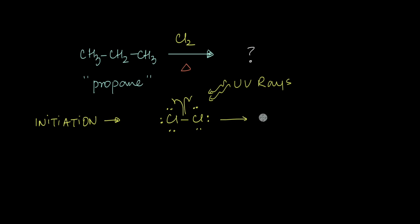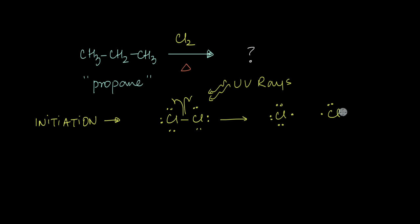They break apart in the form of chlorine radicals. The electrons in this bond are attracted to the nuclei of two identical chlorine atoms. So when this bond breaks, one electron stays with one chlorine atom while the other electron stays with the other chlorine atom. This bond breaking is represented by single-headed arrows.